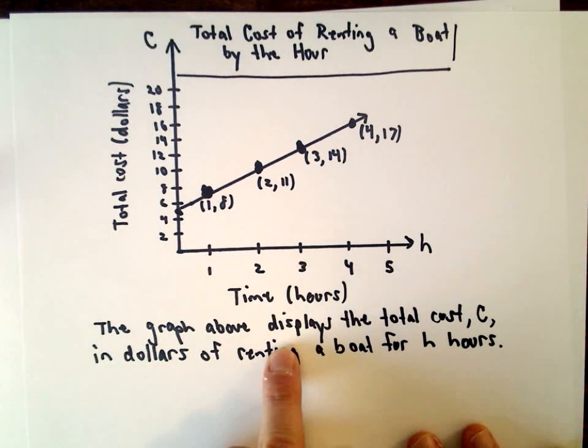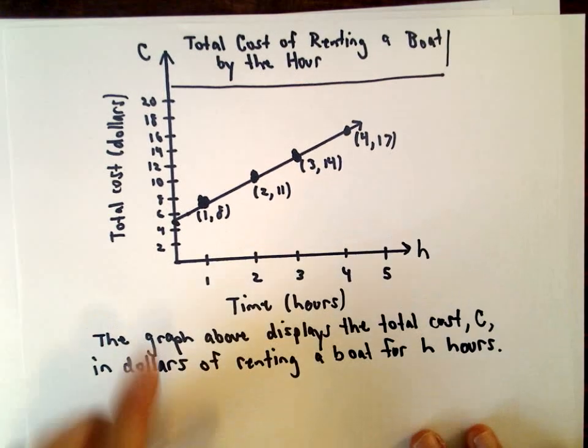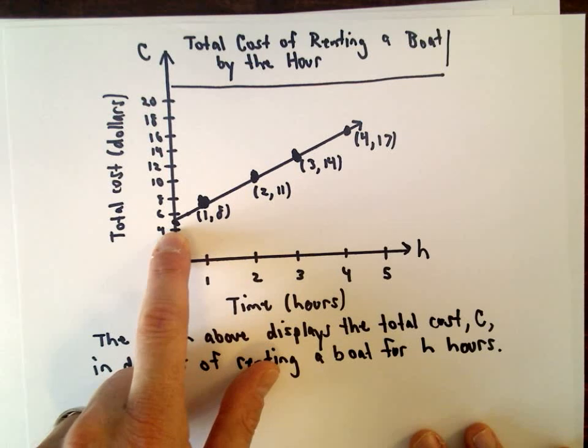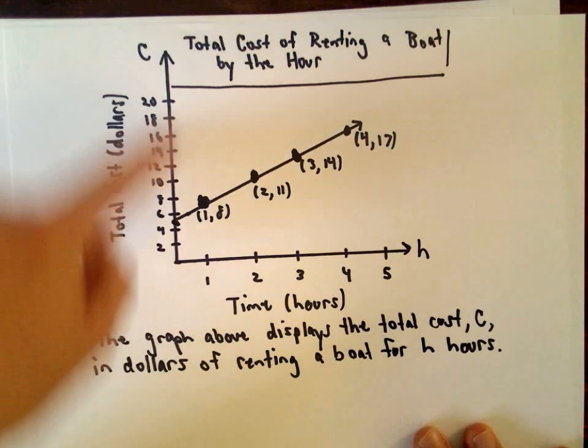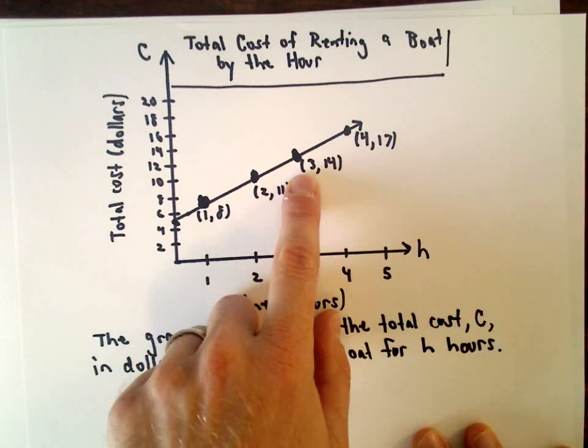Here we've got a graph that displays the total cost C in dollars of renting a boat for h hours. The graph is a little rough but I've labeled it. This would be the point (0,5) on the vertical axis. It goes through (1,8), (2,11), (3,14), (4,17).